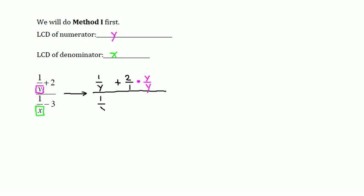My first expression in the denominator is 1 over X. It already has the LCD of the denominator as its denominator, so I will leave that term alone. My second term I'll write as 3 over 1, and I can see that its denominator is missing a factor of X, so that term I will multiply by X over X. To be clear, I am only multiplying the term 3 over 1 by X over X, and the term 2 over 1 by Y over Y — not the whole numerator or denominator.